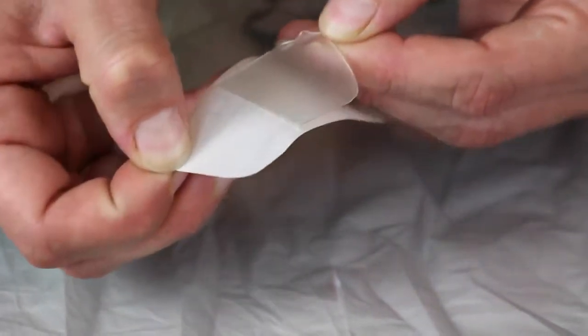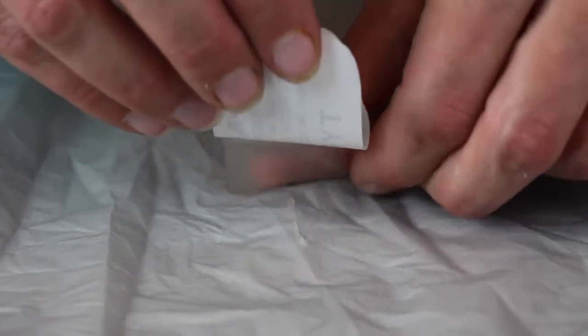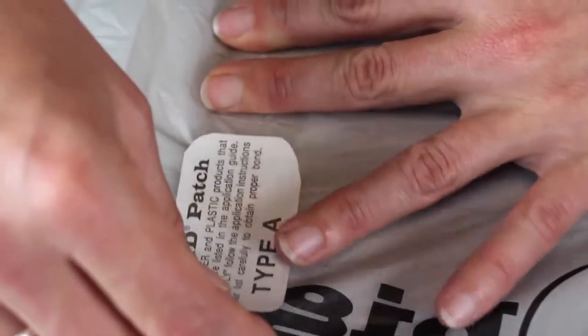Slowly peel back the liner, leaving about half the paper liner on or the patch will stick to your hand. Carefully apply the patch over the tear while applying pressure and peeling the rest of the paper liner to avoid air bubbles.